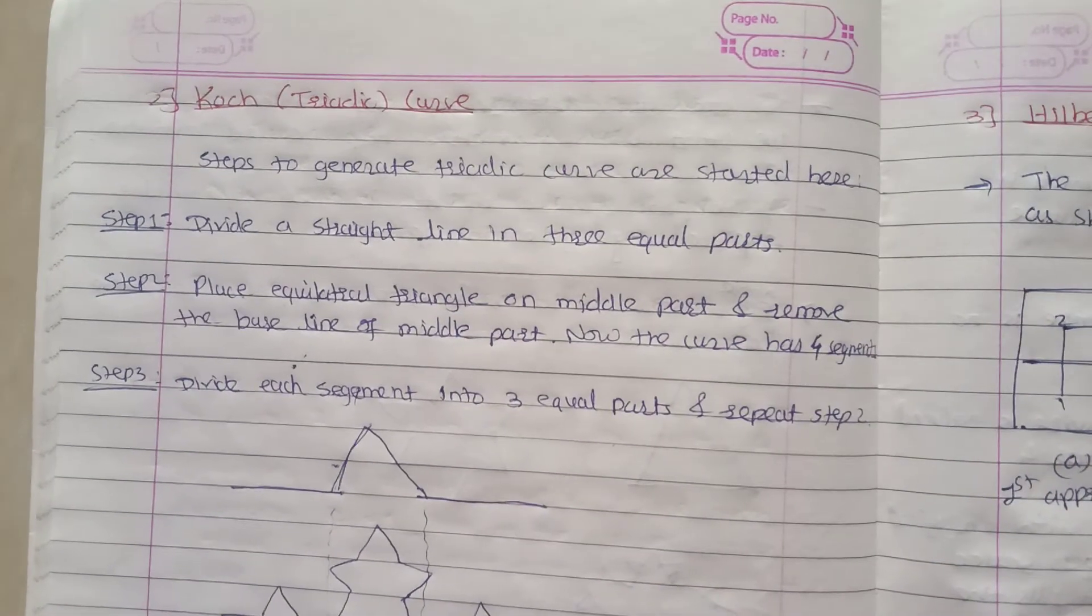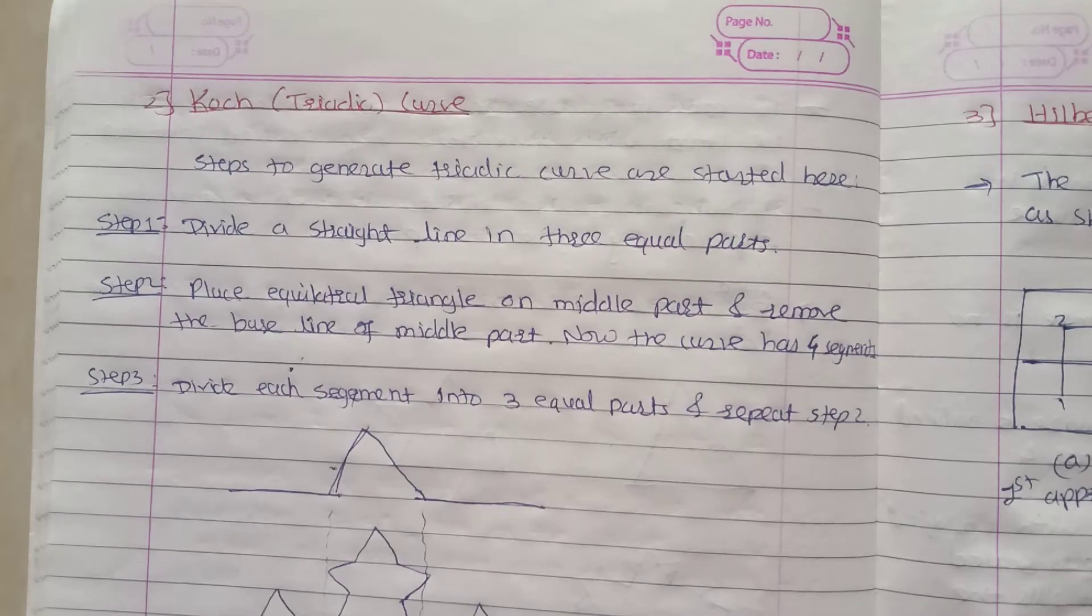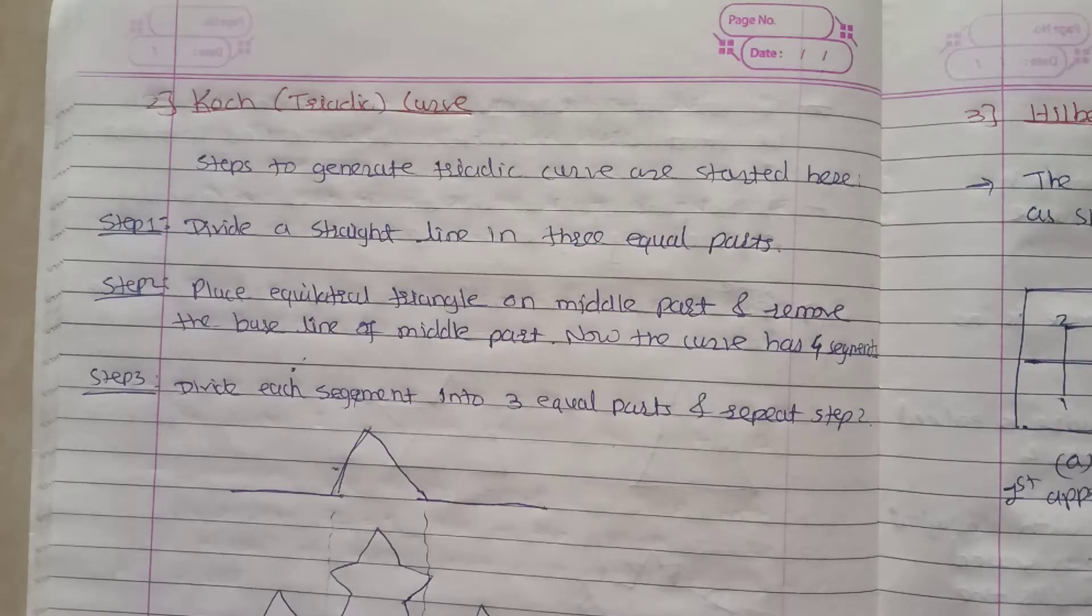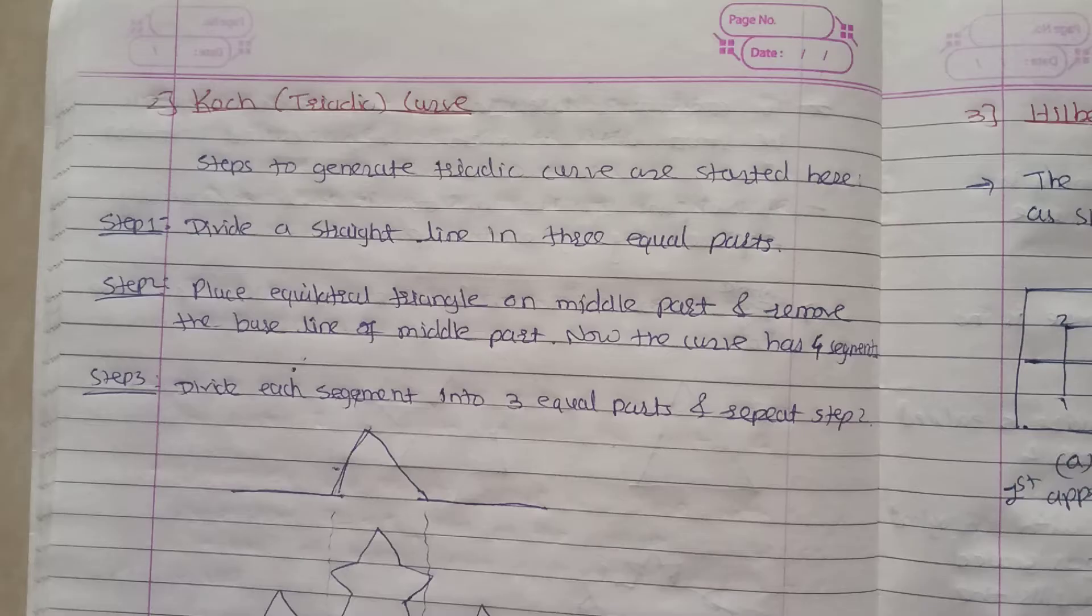The next fractal generation method is nothing but the Koch or the triadic curve method. So in this, same as like the snowflake, we use Koch's method here as well.